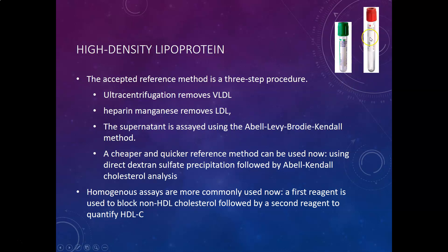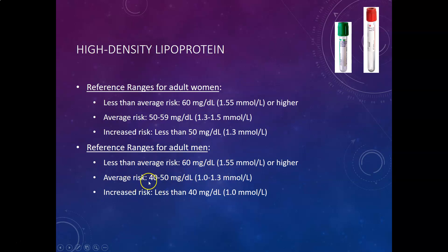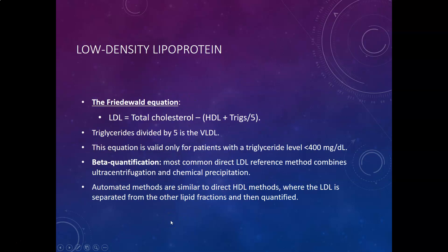Samples are heparinized plasma or serum. The reference range for adult women: less than average risk at HDL of 60 mg/dL or higher; average risk at 50 to 59 mg/dL; increased risk at less than 50 mg/dL. For men: less than average risk at 60 mg/dL or higher; average risk at 40 to 59 mg/dL; increased risk at less than 40 mg/dL. The key difference is the increased-risk cutoff — women are at high risk below 50, men below 40. Everyone ideally should be above 60.